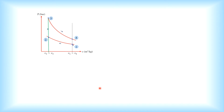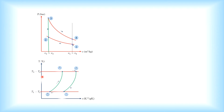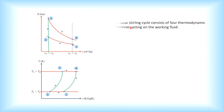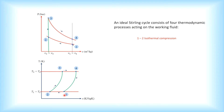This is the PV diagram for the Stirling cycle, and this would be the TS diagram for the Stirling cycle. It consists of four thermodynamic processes. First, from state point 1 to 2 — as you can see from the diagram — this is isothermal and it is a compression process. So from state point 1 to 2, we call it an isothermal compression process.